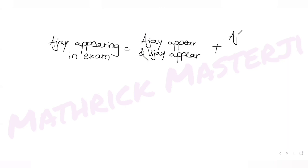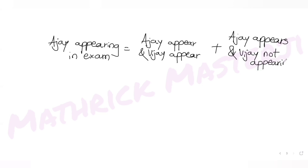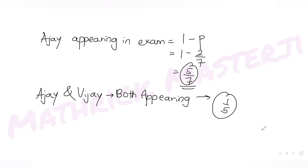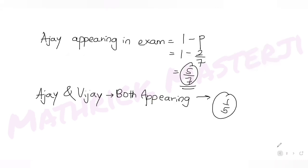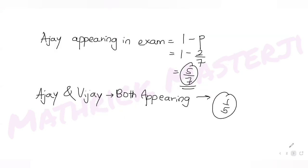Or it can be that Ajay appears for the exam but Vijay does not appear. We already know one of these two probabilities: P(Ajay appears) = 5/7 and P(Ajay and Vijay both appear) = 1/5. So P(Ajay appears, Vijay does not appear) is what we need to find — that's the question asked.